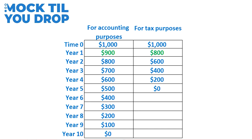We're depreciating the entire amount of that equipment for both accounting and tax purposes. Even though the taxes paid will be different under these two methods each year — you're paying less tax for tax purposes because you're depreciating more — the total taxes paid will be the same in the end. The only difference is the timing of the taxes being paid. Assuming the company will be around for 10 years, we can create deferred taxes from this.